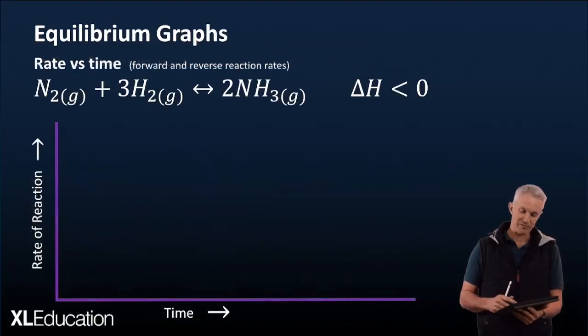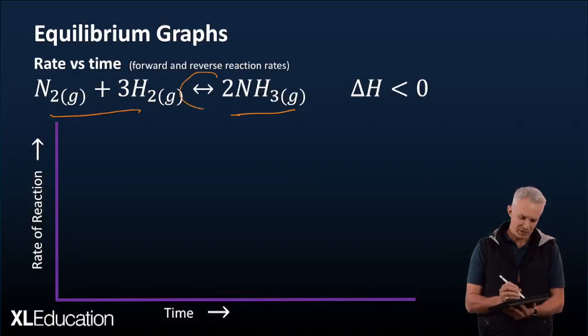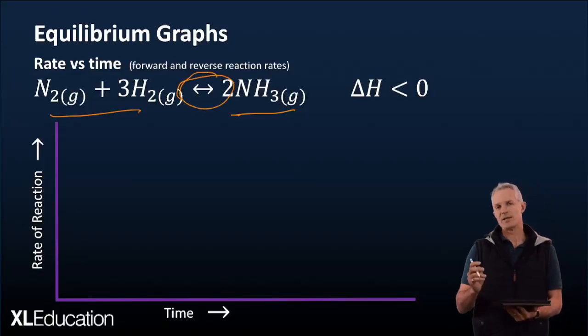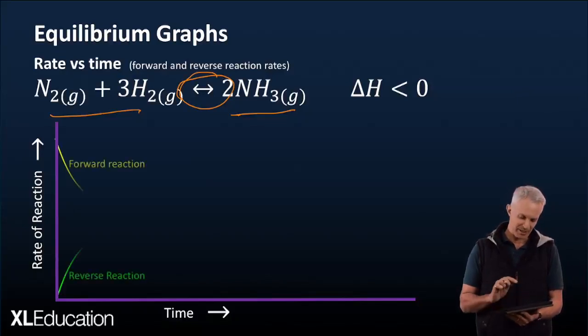There's another type of graph, which is a rate of reaction graph. So instead of looking at the components of the reaction, in other words the substances, we're interested this time around in the actual reaction rates. How many cars are on the road, going back to that analogy. So in this case, there's only two options. It's either going forward or it's going backwards. Those are the two lines that we've got. So the forward reaction is generally indicated at the top and the reverse reaction at the bottom.